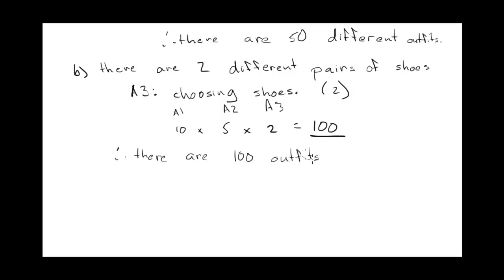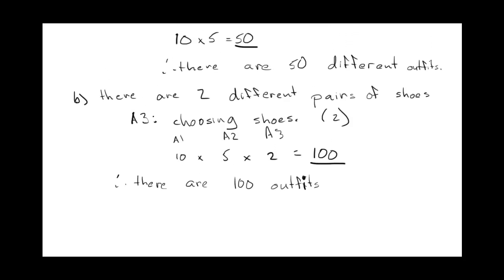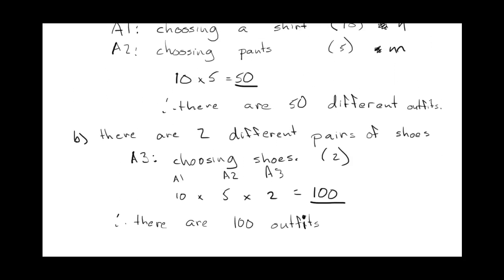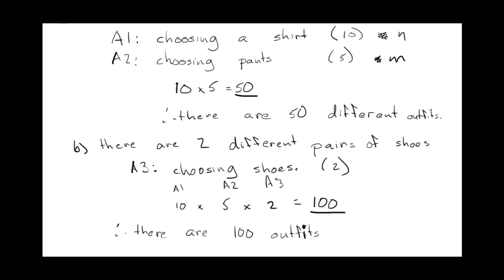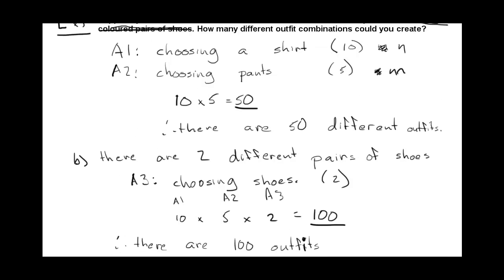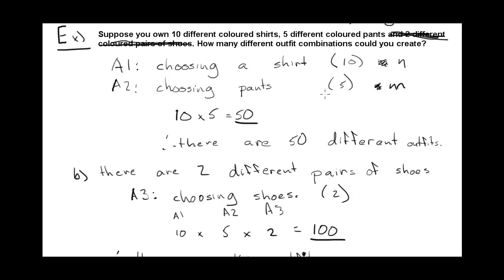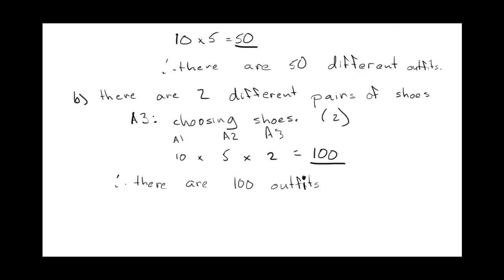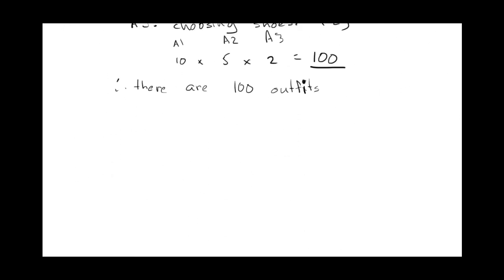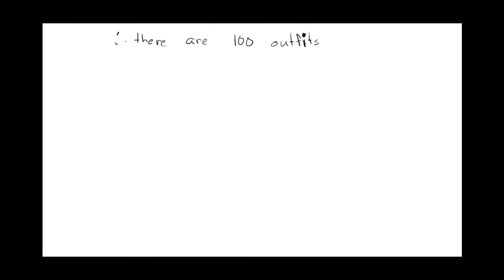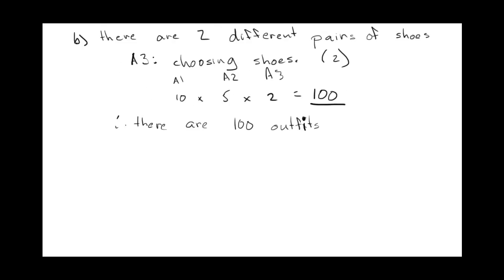That's quite a big number, and imagine doing a tree diagram with a hundred different branches — we definitely don't want to do that; even fifty is too much. With just ten shirts, five pants, and two pairs of shoes — a limited wardrobe — we've been able to create a hundred different outfits.